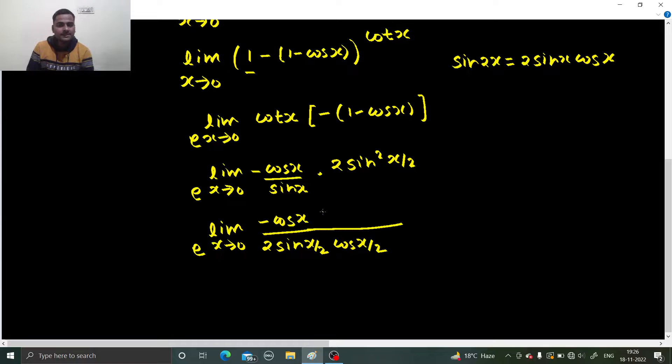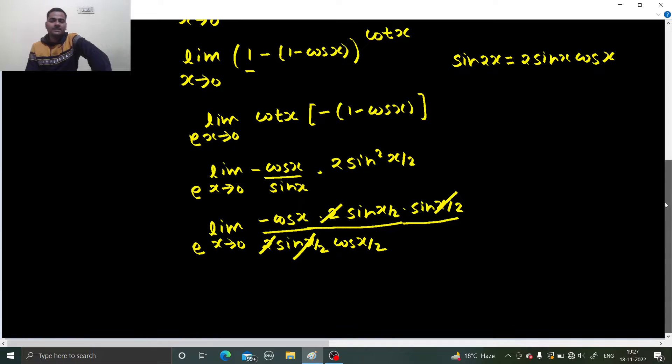This can be written as sin x by 2 into sin x by 2. Now what will happen is one sin x by 2 will get cancelled, this 2 will get cancelled. Sin x by 2 divided by cos x by 2 is tan x by 2.